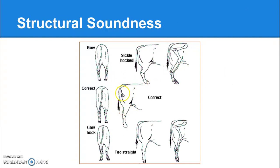Looking at the side view of the hind end, you want the hip angle to mirror the shoulder angle — ideally about a 90-degree angle — which gives you a nice straight leg all the way down. If they are too straight, what we call post-legged, you'll get pressure on the hock and fetlock. If they are sickle-hocked, you'll end up with pressure on the hock and the stifle.